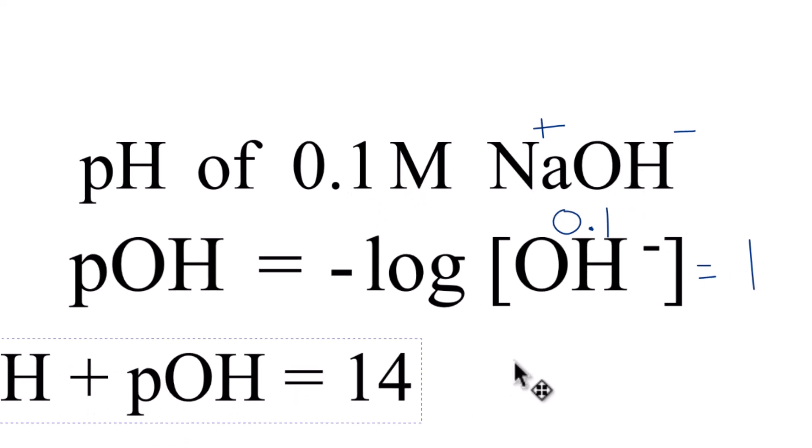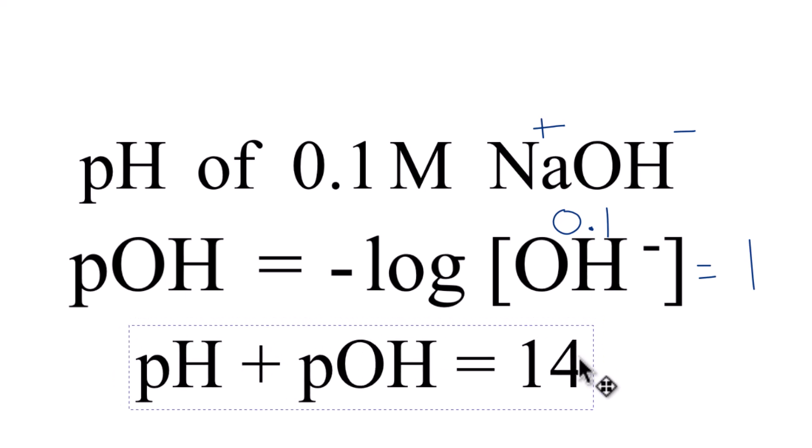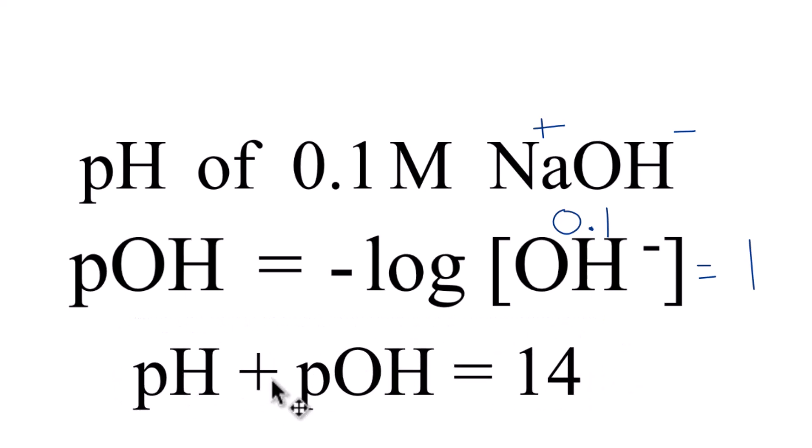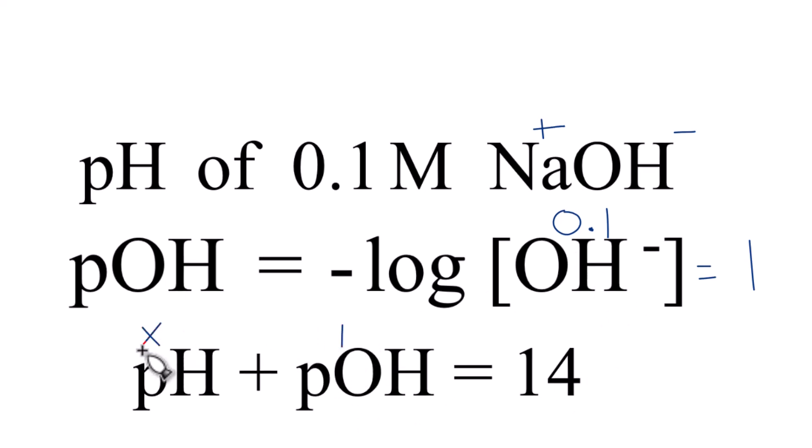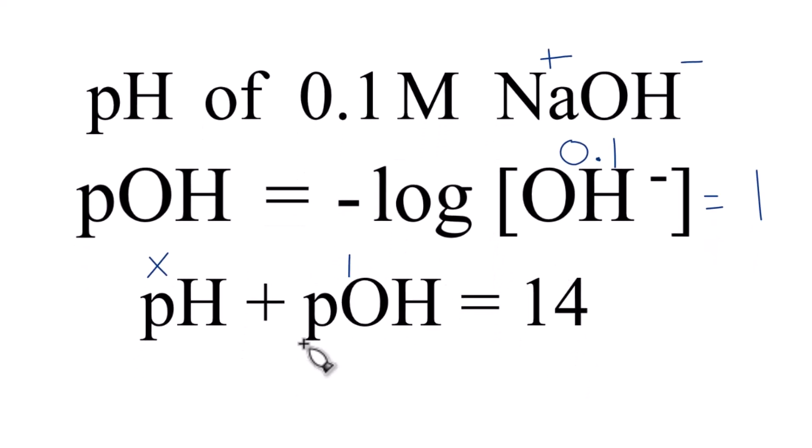Now that we have that, we use this formula here that says pH plus pOH equals 14. We know the pOH is just 1. So some number plus 1 equals 14. 13 plus 1, that equals 14. So our pH equals 13.